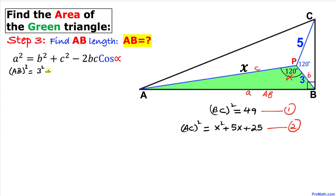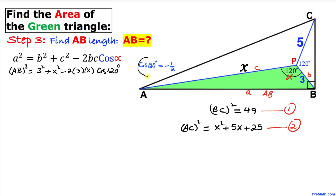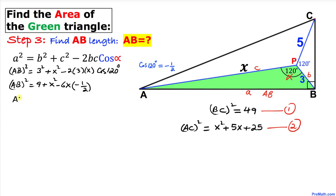We know cos(120°) = −1/2, so substituting: AB² = 9 + X² − 6X × (−1/2), which simplifies to AB² = 9 + X² + 3X. Rearranging: AB² = X² + 3X + 9. I am going to call this equation 3.